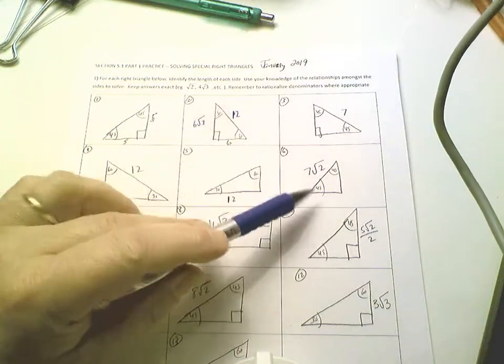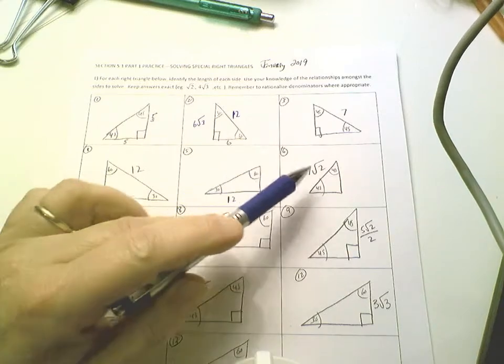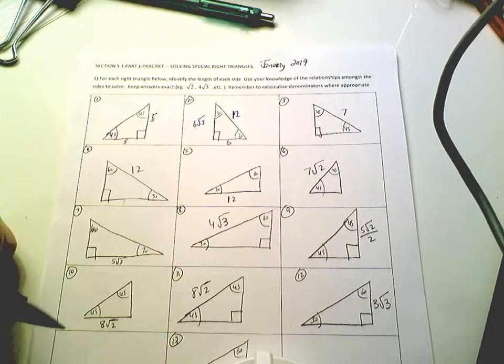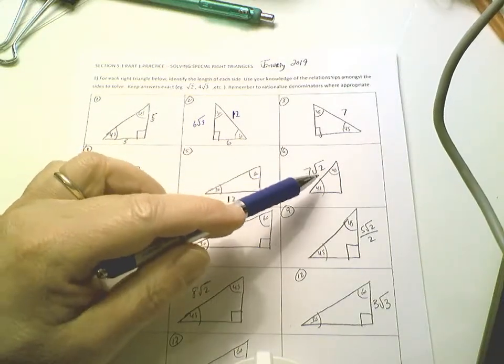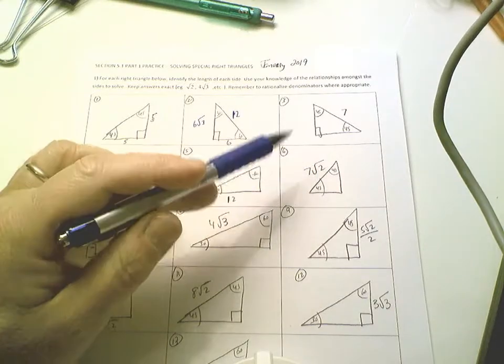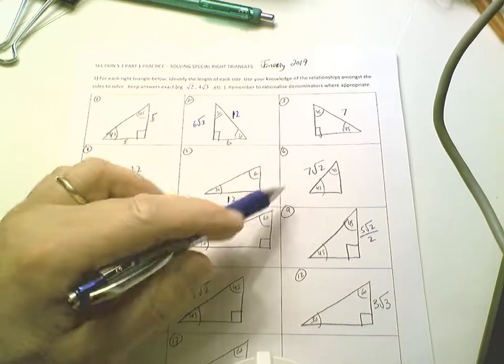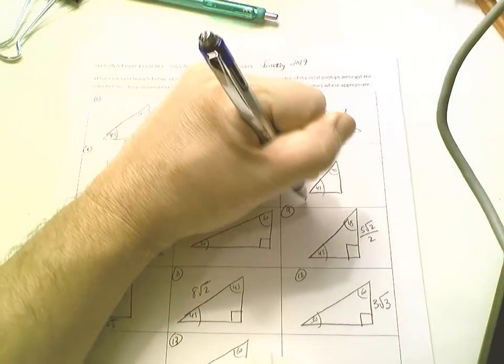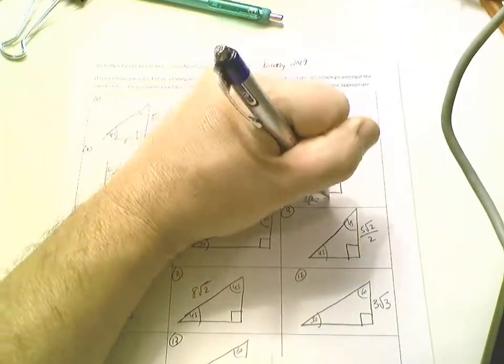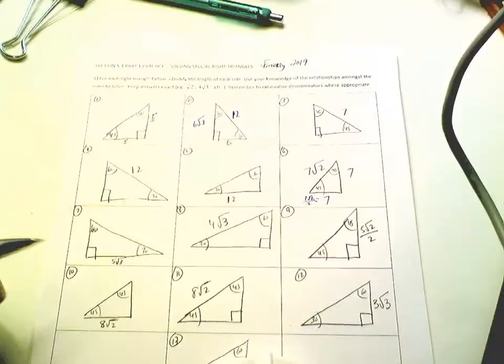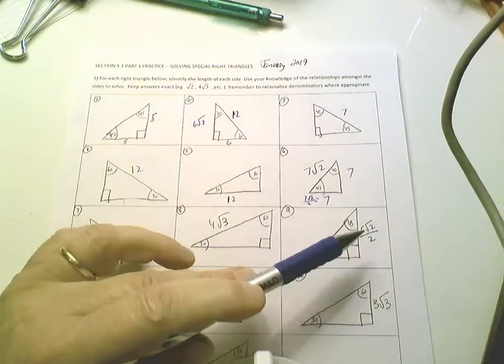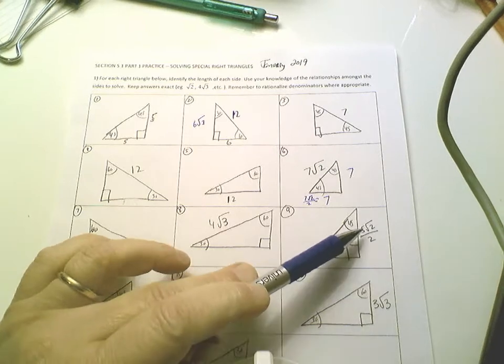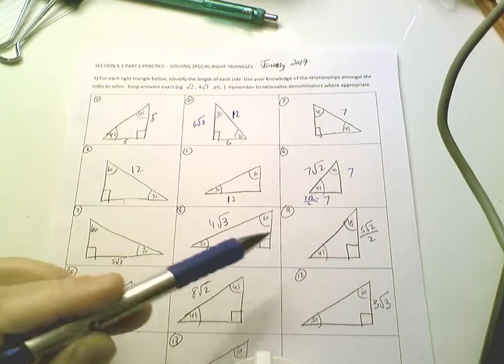A 45-45-90 triangle, 7 times the square root of 2. If I know the length of the hypotenuse, the rule was divide by the square root of 2 to get the sides. 7 root 2 over 2 is nothing more than 7. And that's what happens here.